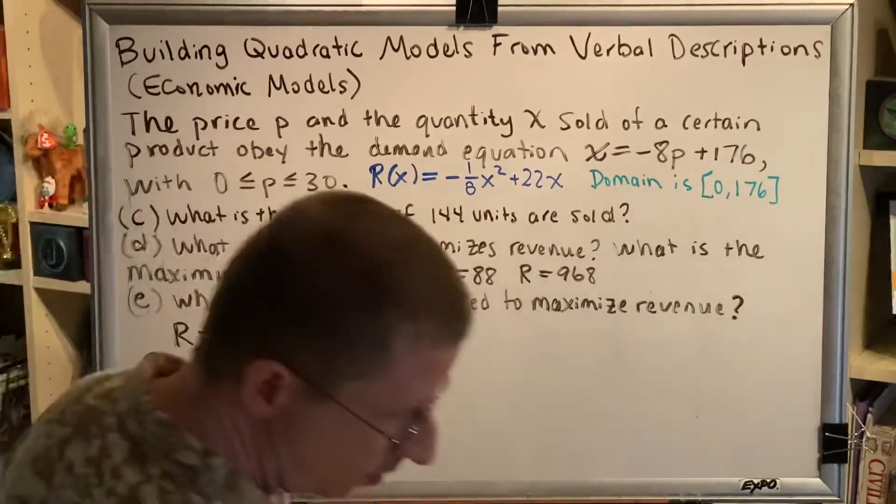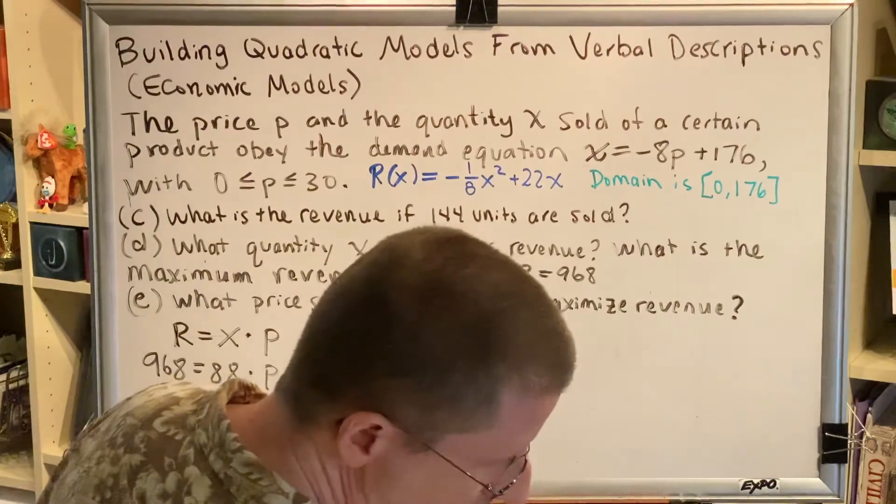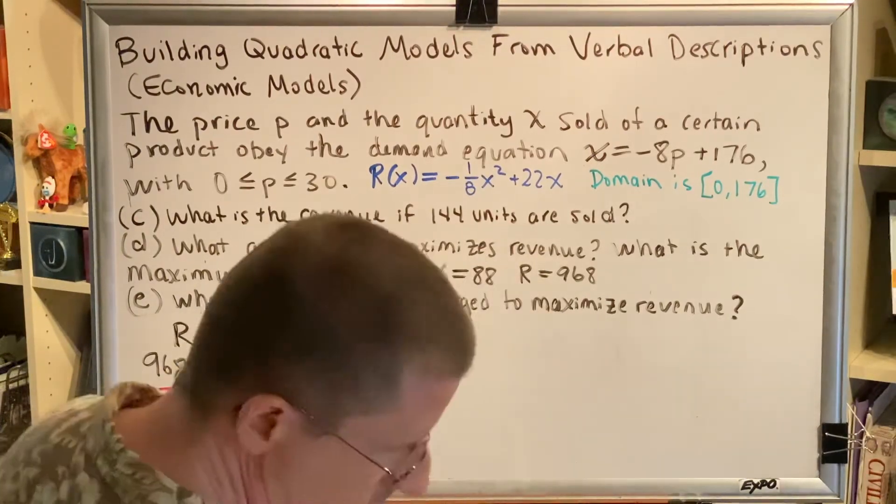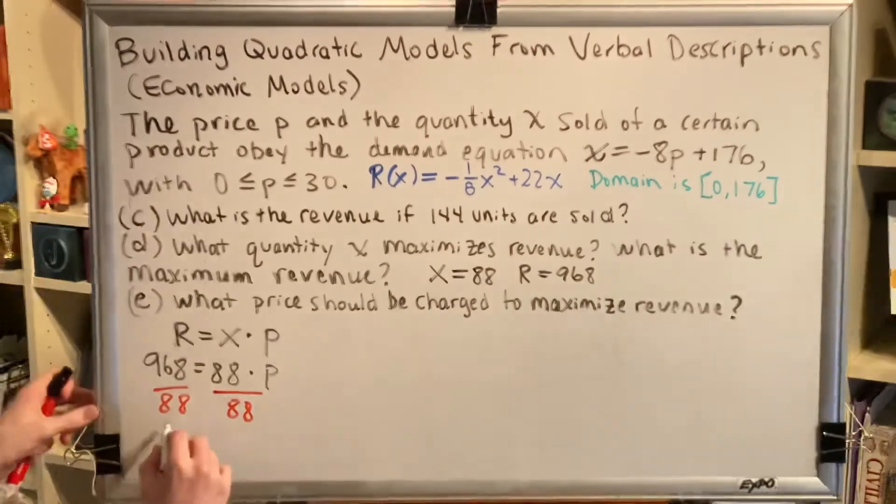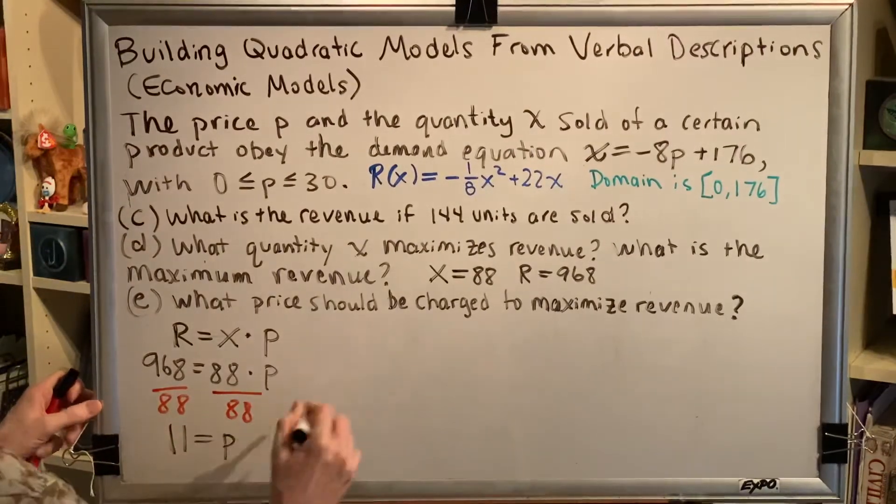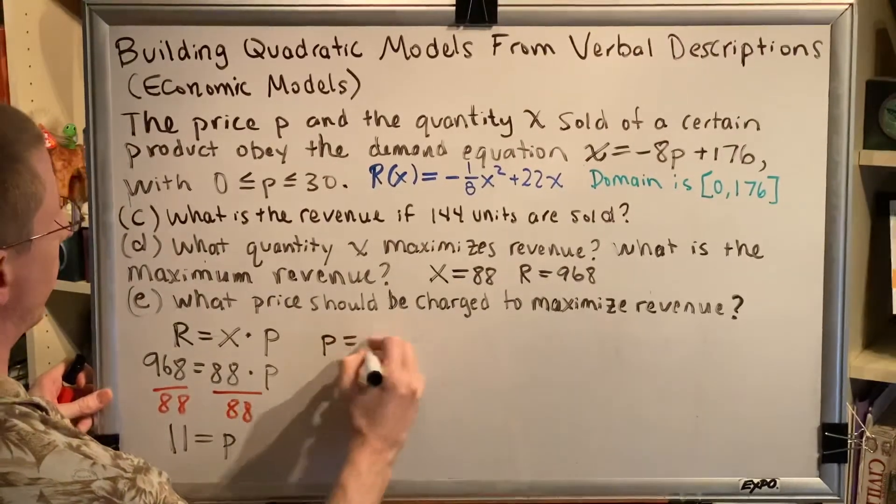Do the division. 968 divided by 88. And we get 11. So, the price that we should charge is $11.